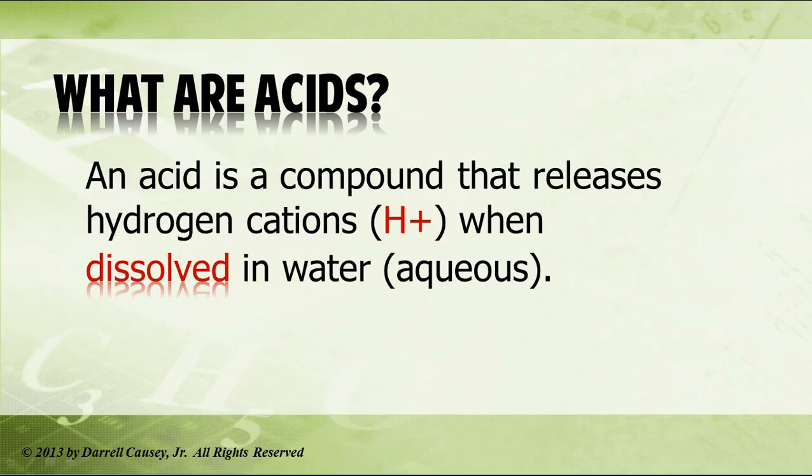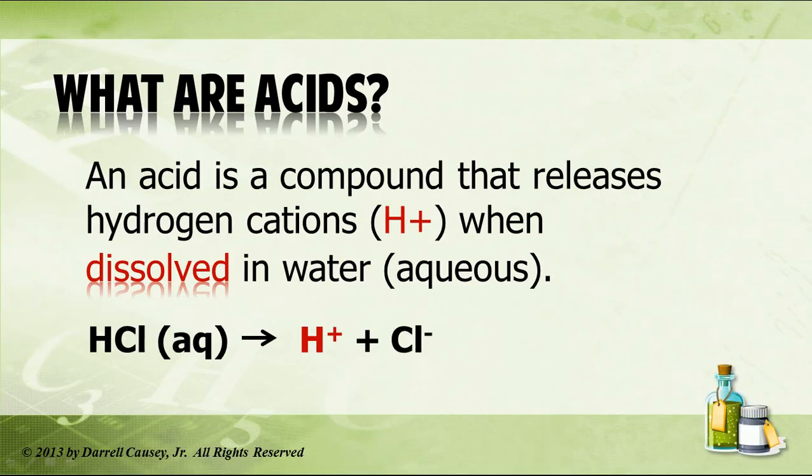And that gives us an acid. Here's an example: hydrogen chloride, when dissolved in water, gives us hydrogen ions and chlorine ions. And there we have it — it's an acid.